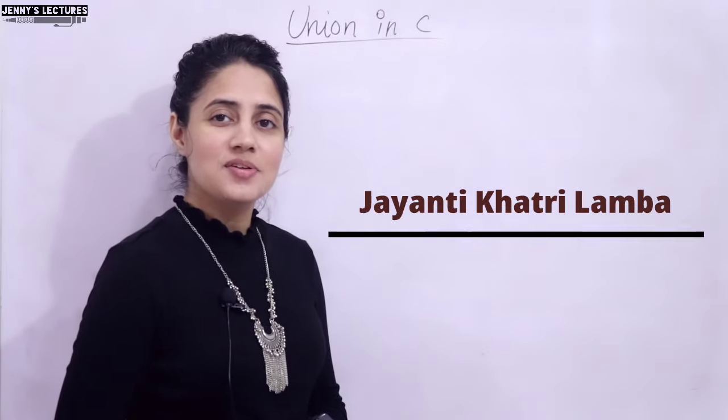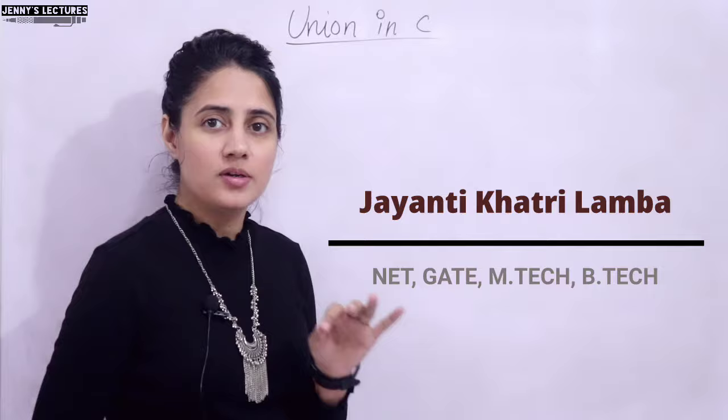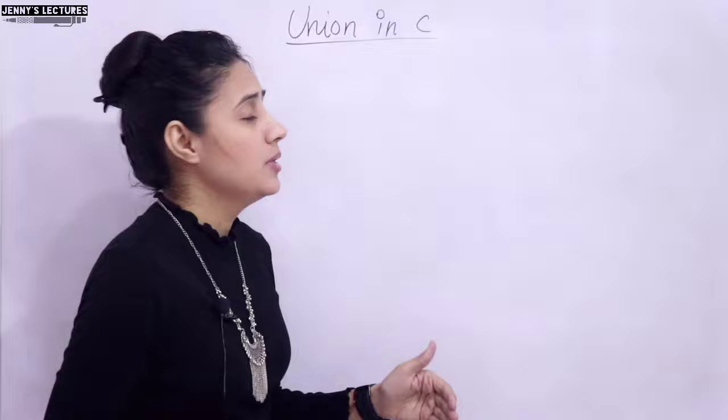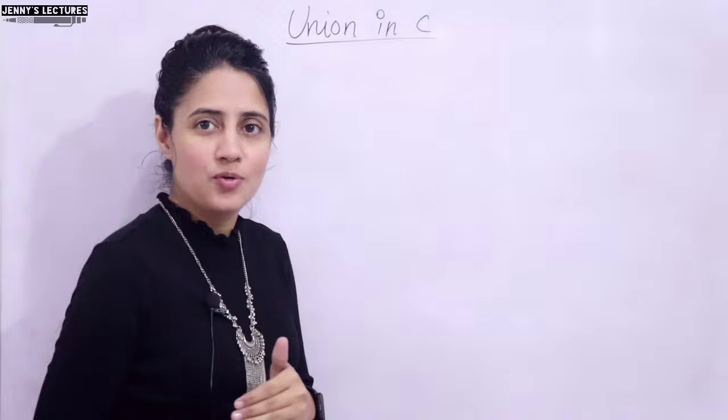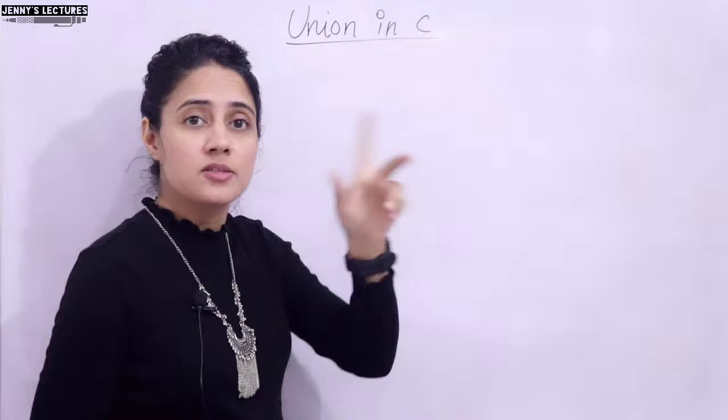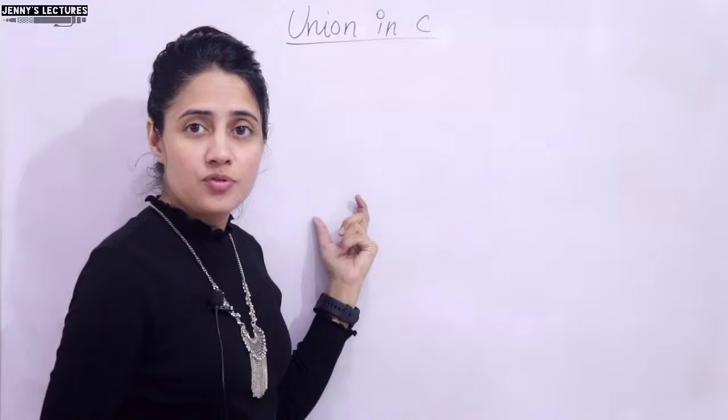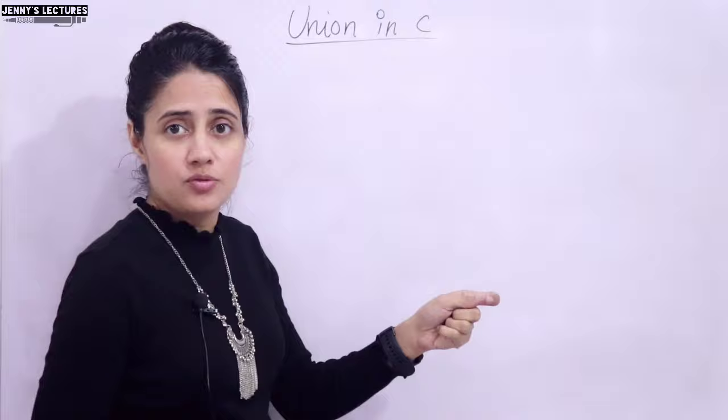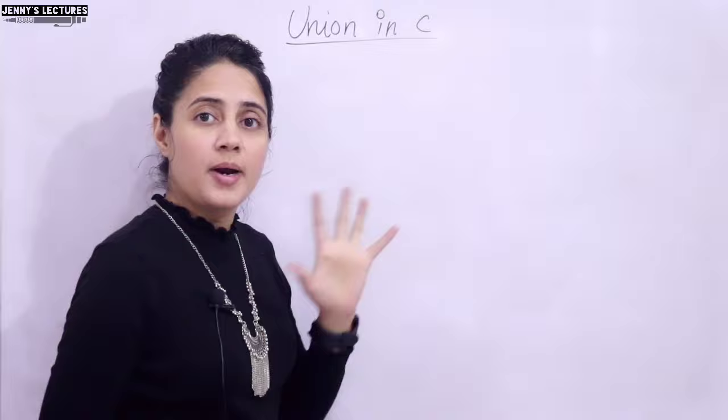In this series on learning C programming, we have discussed structures in C. Now we are left with one small concept: union in C. It is almost the same as structure, but we'll discuss the differences in this video. We'll see what union is, how to define it — it is also a user-defined data type like structure — how to use it in your program, its advantages, drawbacks, why we use union, and how it differs from structure, with proper examples and a practical program.